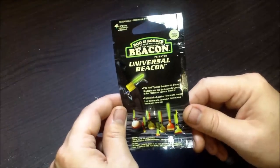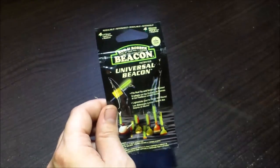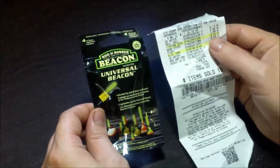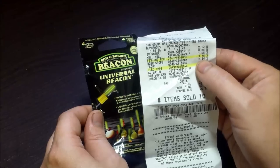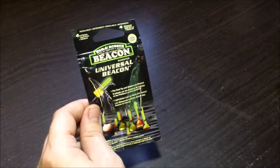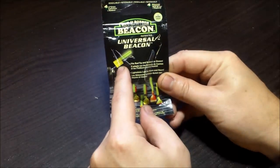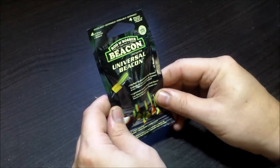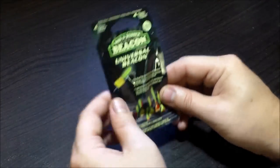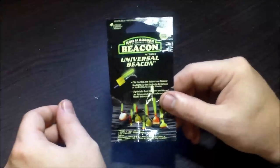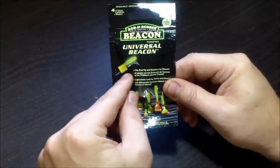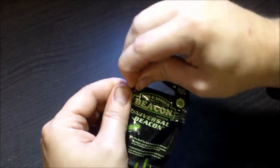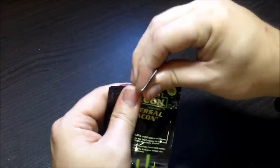These are Beacon universal lights. You can pick them up at Walmart. I think I paid three dollars and 46 cents. They come with little attachments you stick in your poles, you can stick them on your bobbers. But there's four sticks that come in this, that's good for like one night of fishing.